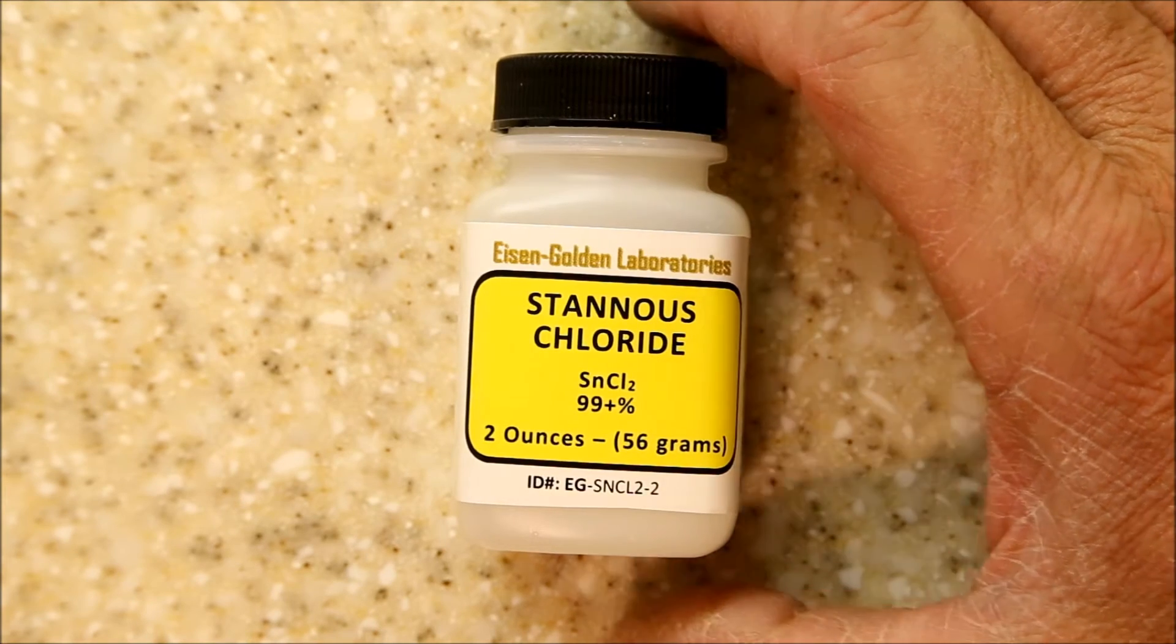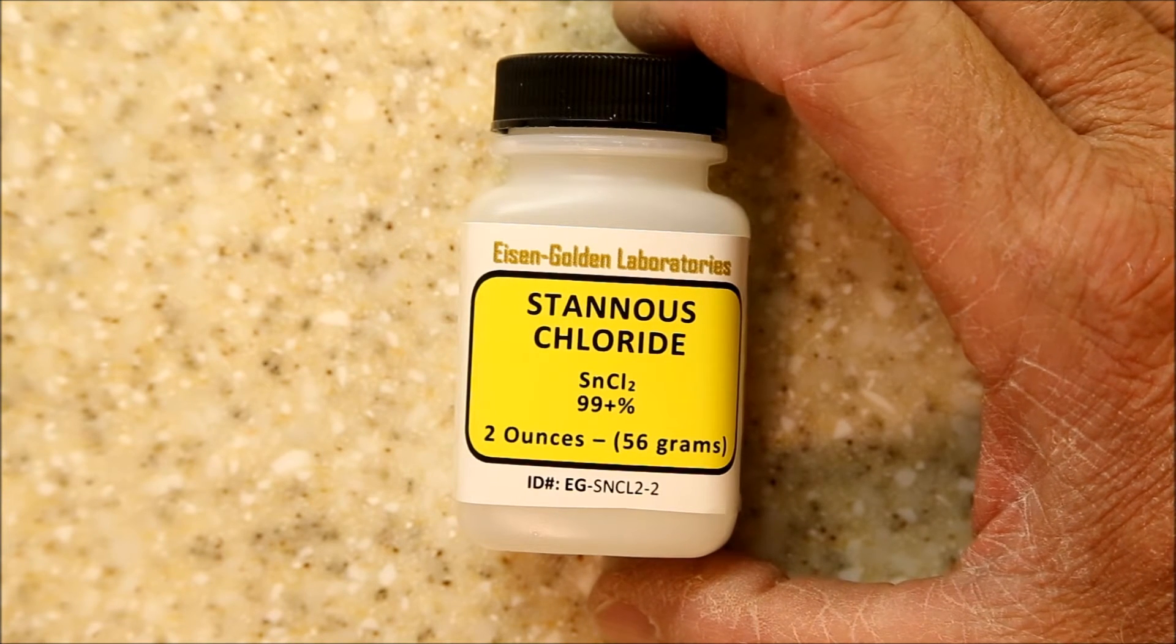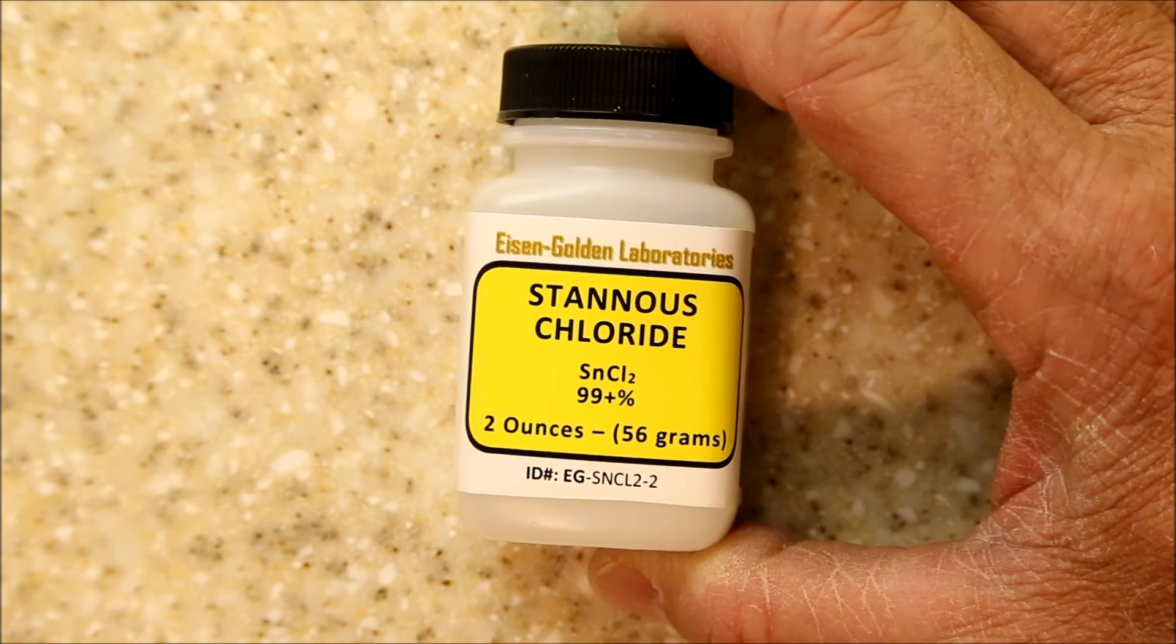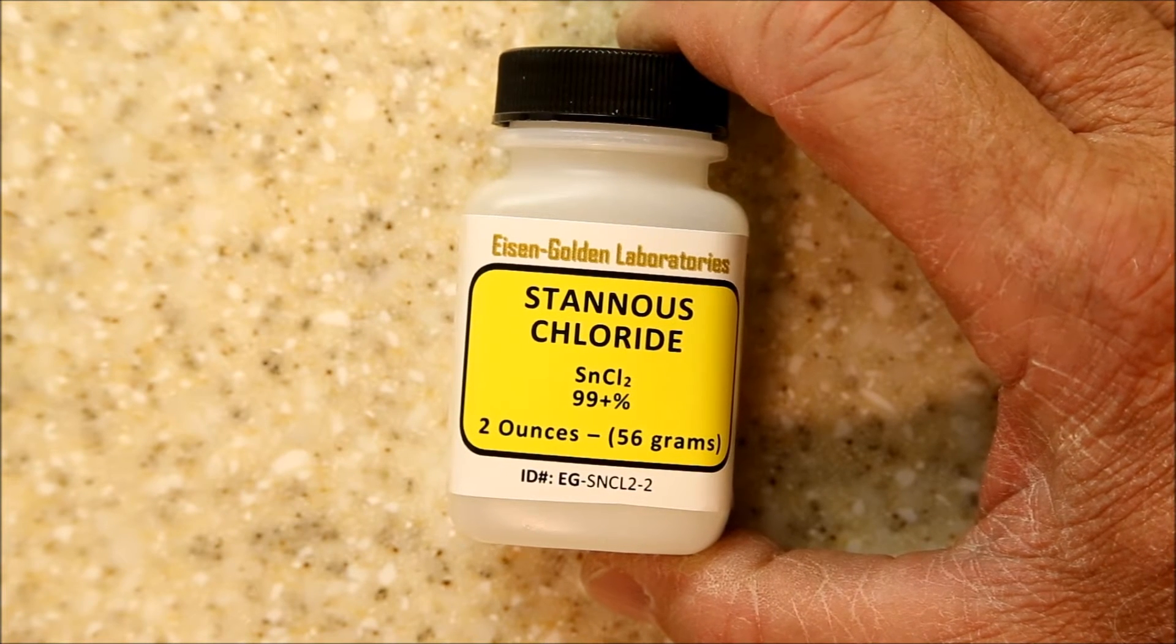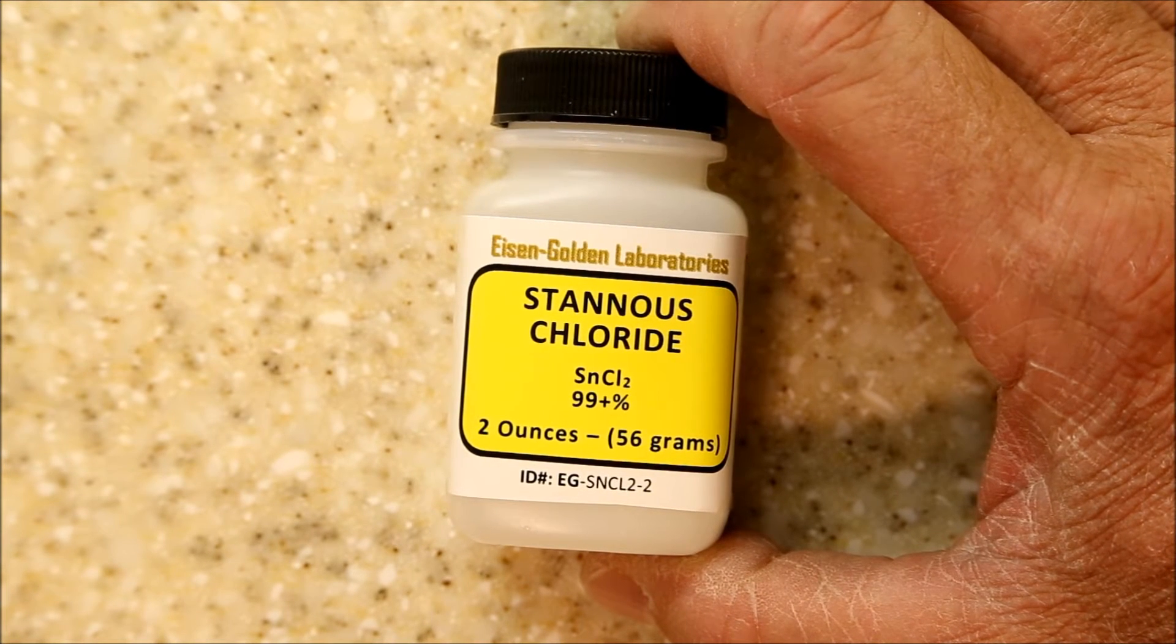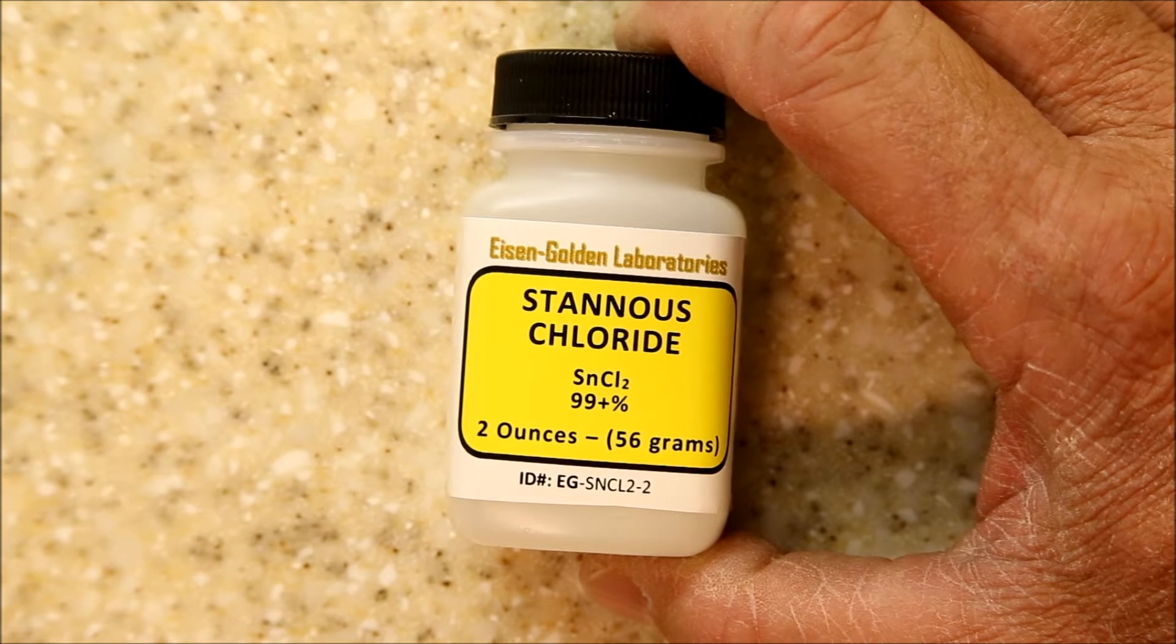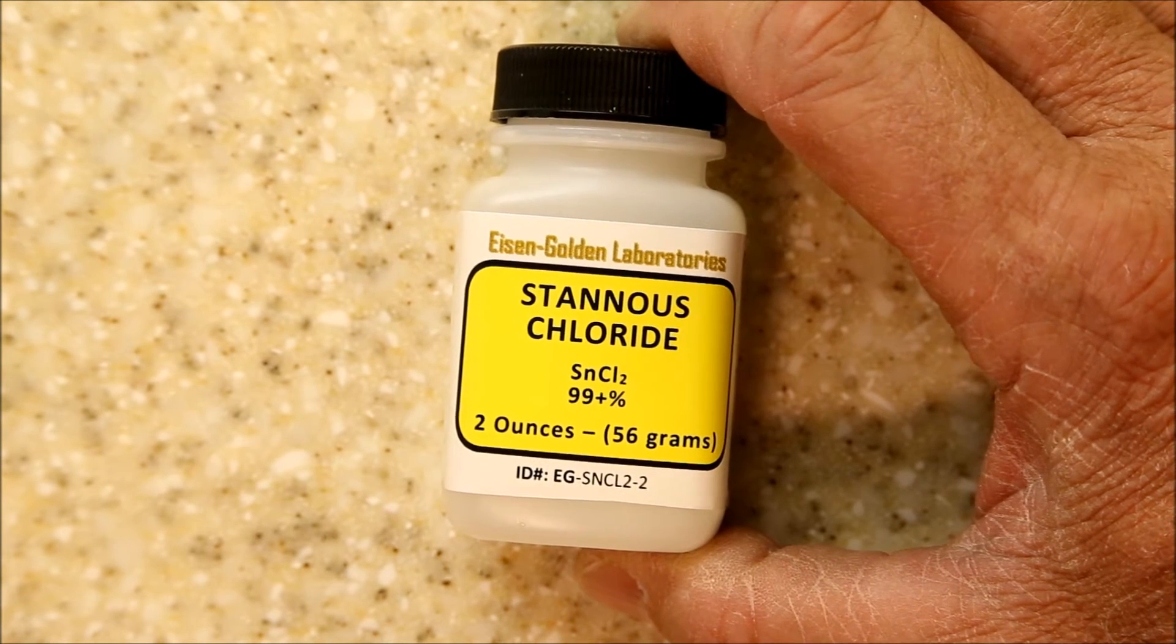The growing solution is a 50-50 mixture by weight of stannous chloride or tin chloride mixed with distilled water. There are many different combinations that you can use, ratios of weights, but I found the 50-50 works well.